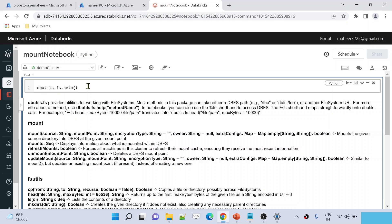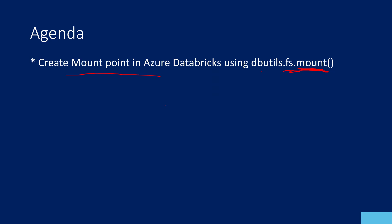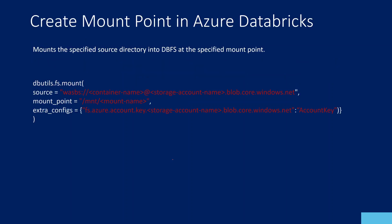In this video we are going to use the mount command to create a mount point. A mount point is nothing but attaching your external storage with your Databricks file system. The Databricks file system is a file system built into Databricks. When you attach external storage to it, you can access that external storage as if you are accessing a local file system.